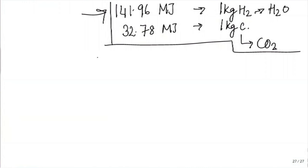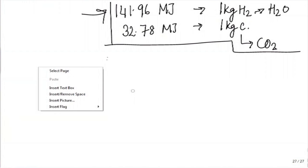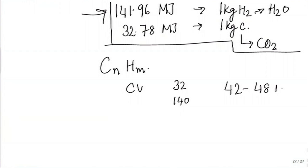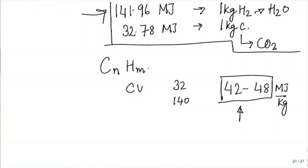Most hydrocarbons are formed of carbon and hydrogen, so they will have a CV higher than 32 MJ/kg and far lower than 140 MJ/kg. In fact, for most fuels we look at — gasoline or diesel — the range is anywhere between 42 to 48 MJ/kg. This is the range in which most calorific values will lie for fuels of interest.